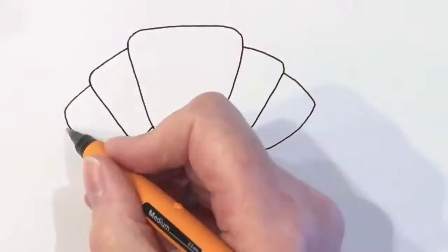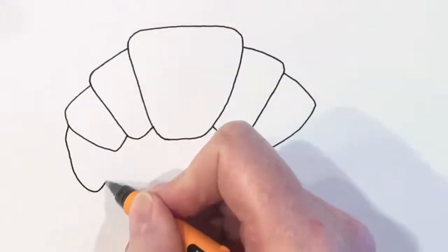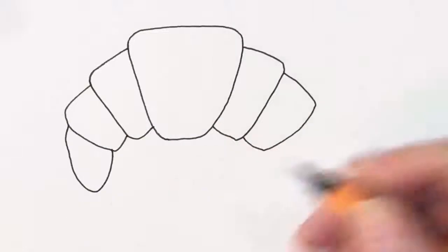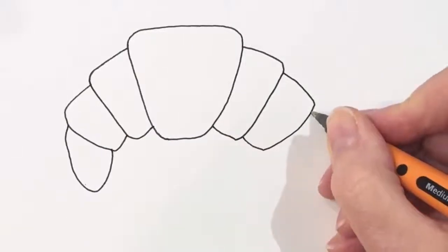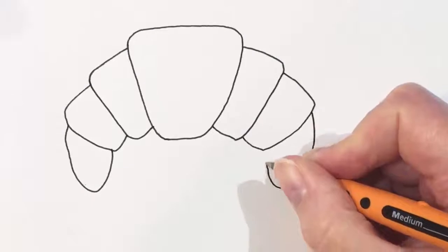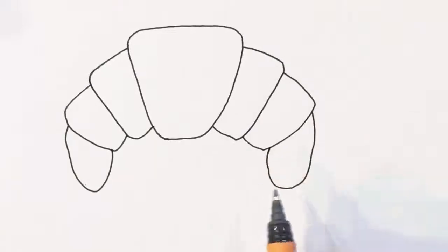Now we're going to put the tail on the croissant and that's the crunchy bit at the end that I like best of all. And so we're going to draw that on this side as well. So now we have our croissant.